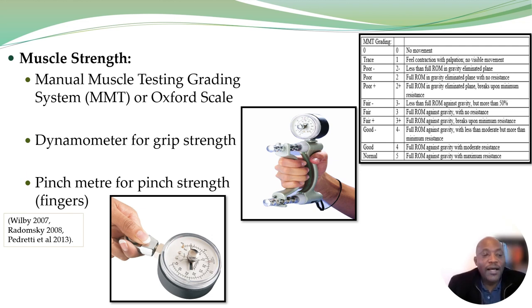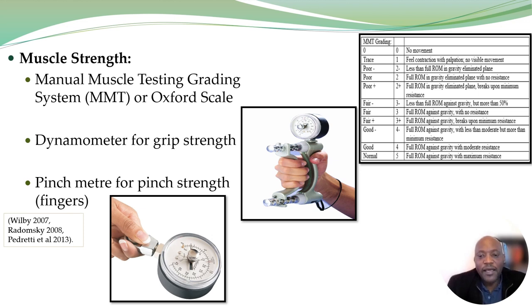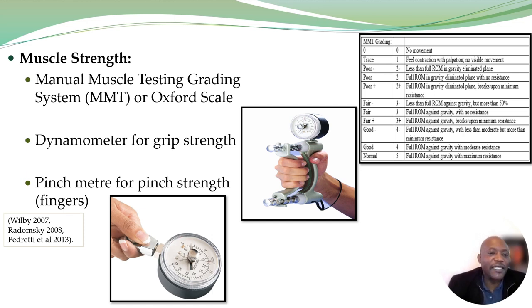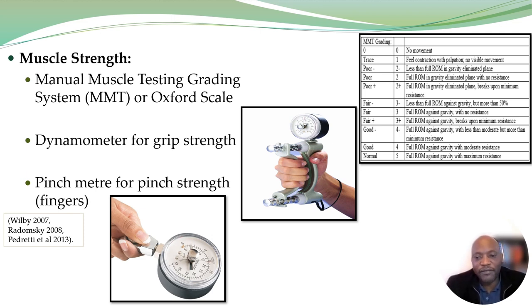We can also assess grip strength using a dynamometer — that's a Jamar dynamometer in the picture. It comes with a set of instructions for positioning the person. Usually you take three measurements and then take an average to get an idea of the person's grip strength, and you can also compare the affected hand and the non-affected hand. We also have the pinch meter, which measures pinch strength for the fingers.